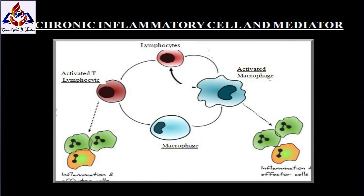The inflammatory response must be actively terminated when no longer needed to prevent unnecessary bystander damage to tissue. Failure to do so results in chronic inflammation and cellular destruction. Resolution of inflammation occurs by different mechanisms in different tissues. These include the short half-life of inflammatory mediators; production and release of TGF-beta from macrophages; production of interleukin; production of specialized pro-resolving mediators such as lipoxins and resolvins; downregulation of pro-inflammatory molecules such as leukotrienes; and upregulation of anti-inflammatory molecules such as interleukin-1 receptor antagonist or soluble TNF receptor (TNFR).